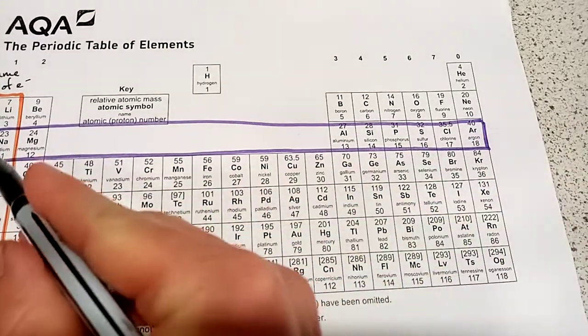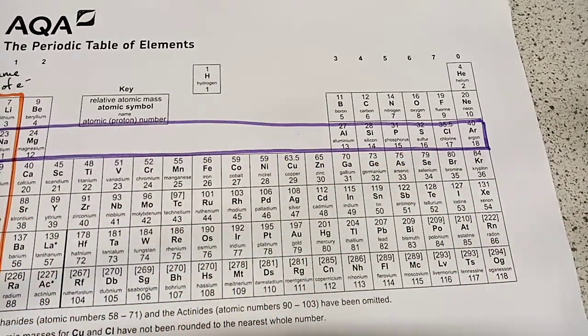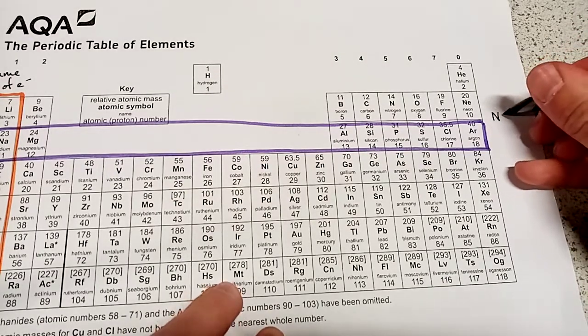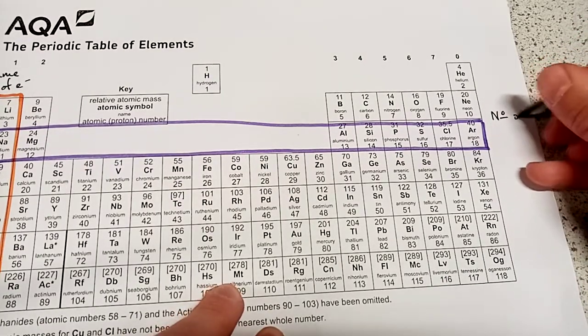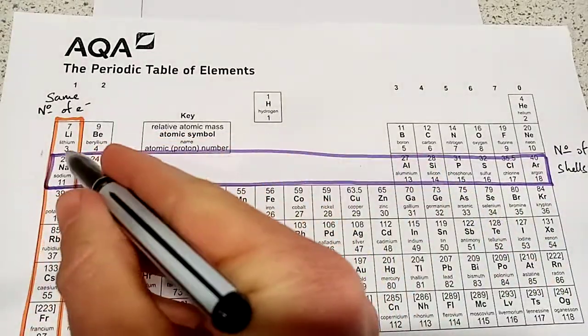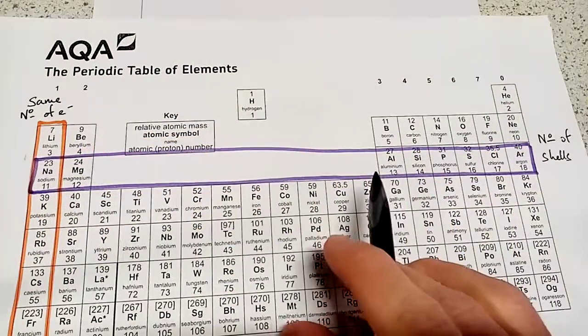So what's going to be staying the same as we move across a period? Well I'll tell you. It is the number of shells. So every element that's in the same period will have the same number of shells.